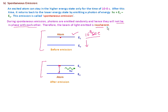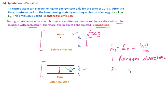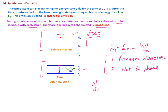Photons emitted in spontaneous emission are not in proper phase with each other. So this kind of light is known as incoherent light. The difference E1 minus E0 between excited state and ground state equals h-nu, which is the energy of the emitted photon. In case of spontaneous emission, the two major points to remember are: number one, photons are emitted in random directions, and number two, they are not in phase.